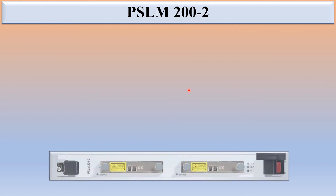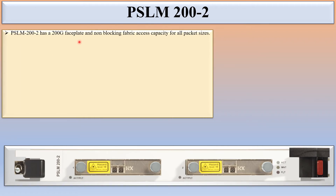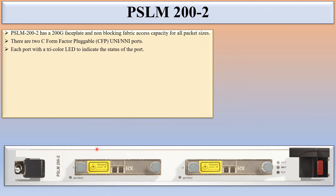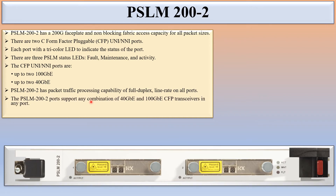Next is the PSLM 200-2. This is the physical view of the PSLM 200-2 card — there are 2 ports: port 1 and port 2. PSLM 200-2 has a 200G faceplate and non-blocking fabric access capacity for all packet sizes. There are 2 C form factor pluggable CFP ports. Each port has a tri-color LED to indicate status, and there are 3 PSLM status LEDs: fault, maintenance, and activity. The CFP UNI/NNI ports support up to 40 GB or 100 GB, and any combination of 40 GB and 100 GB CFP transceivers can be used in any port.